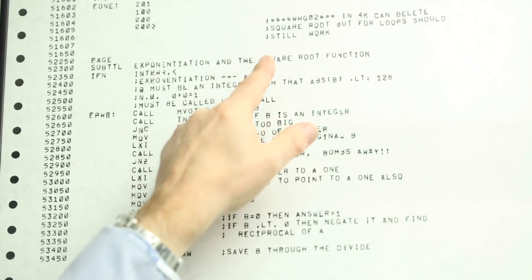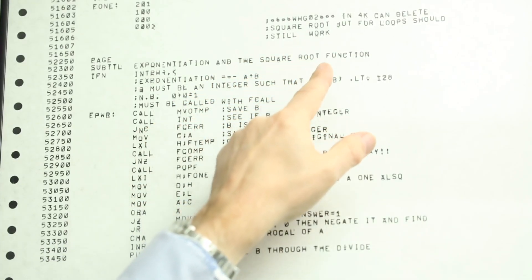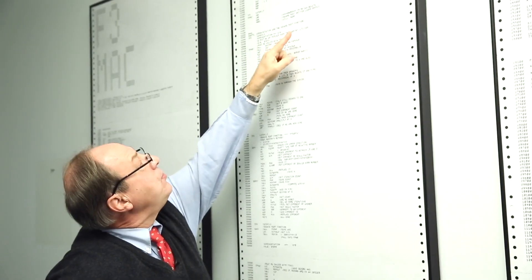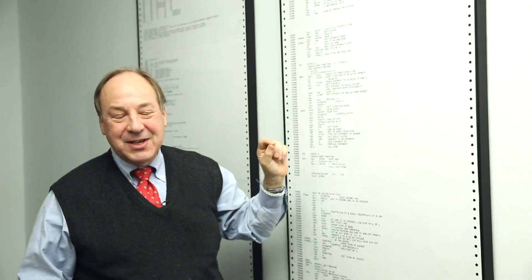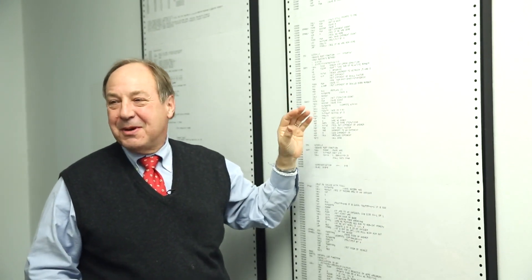Here's an interesting comment up here. It says in 4k can delete square root but for loops should still work. What that means is there were two ways to compile this program.